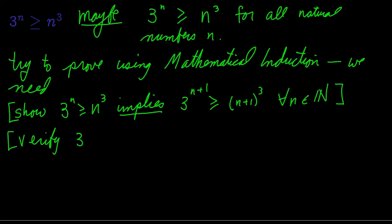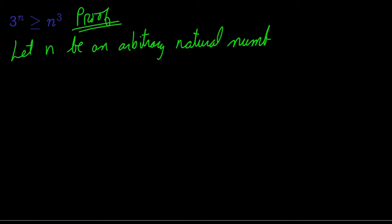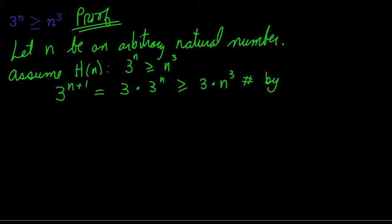And for any natural numbers that this argument doesn't cover, we need to verify them independently. Here's a first attempt at proof. We let n be the name of some arbitrary natural number. Here's our inductive hypothesis: 3 to the n is no smaller than n cubed. Working things through for 3 to the n plus 1, after a bit of algebra and using the inductive assumption, we get 3n cubed.